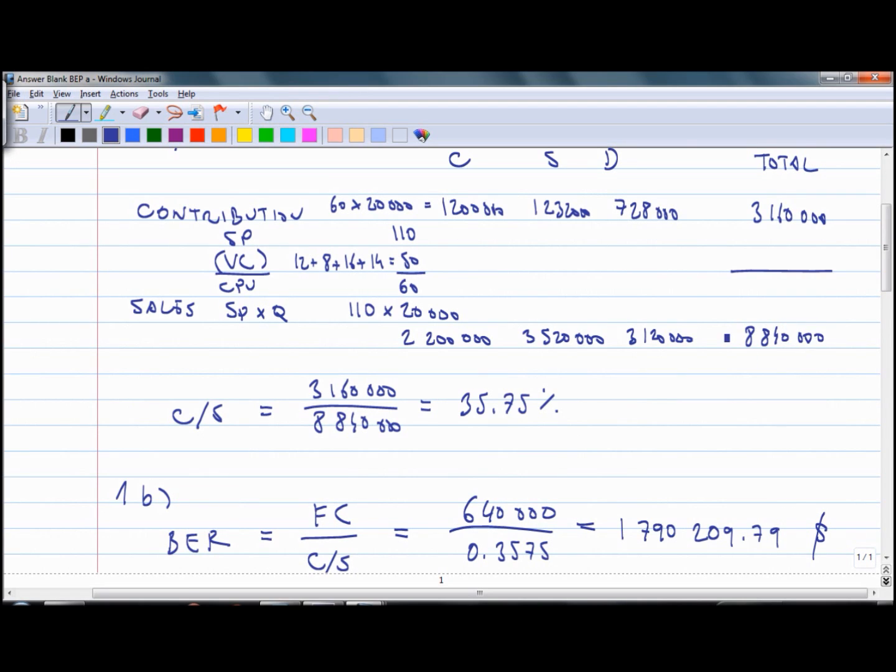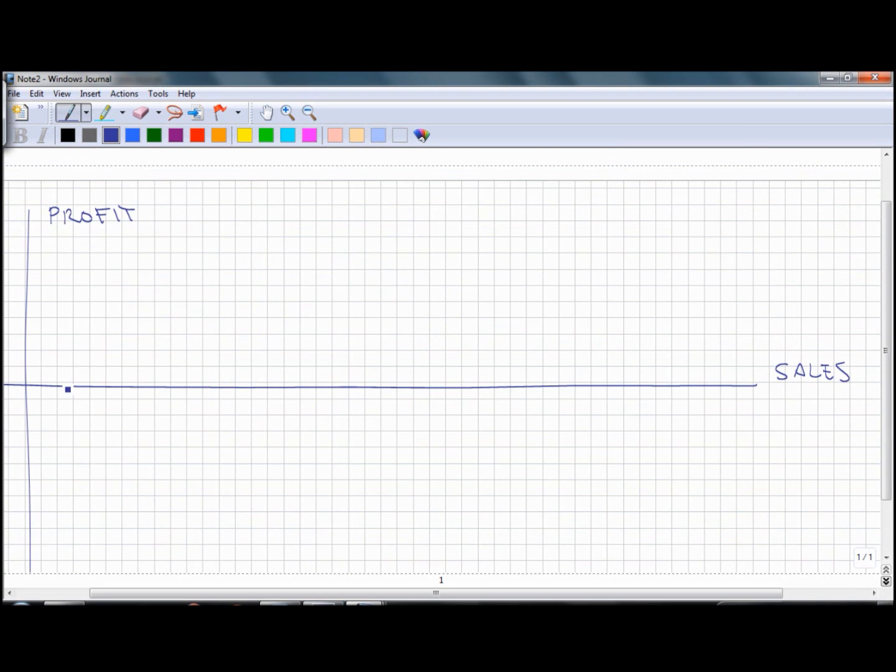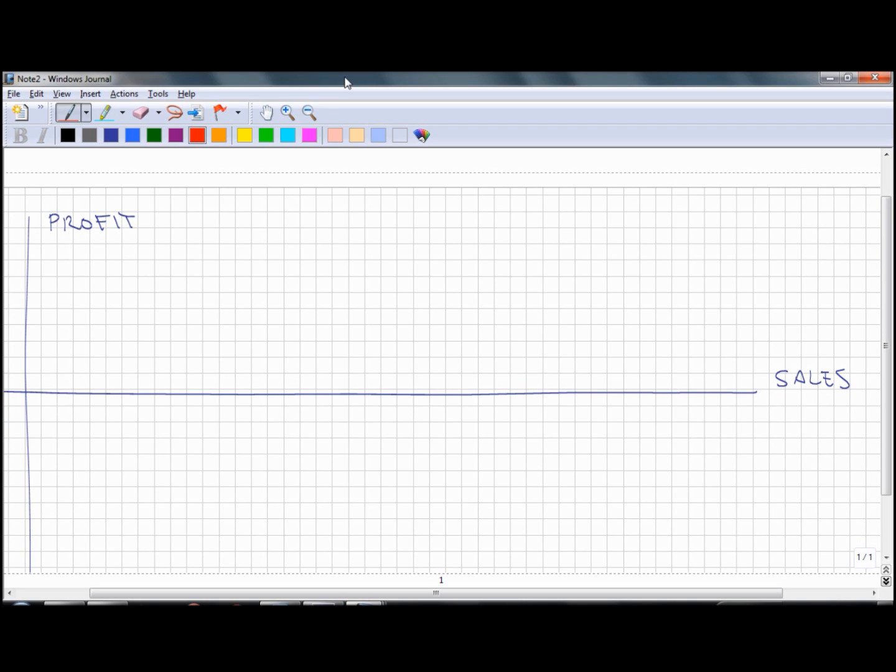Next we need to put appropriate measure on our graph. In part A we calculated that our total sales will be 8.8 million and break even sales will be 1.8 million approximately. Regarding the profit axis, we see that the profit will go from minus 640,000 up to about 2.5 million. I suggest that one square will represent 200,000 dollars. Let's draw the first point of fixed costs first on profit axis, and then break even point for constant mix of 1,790,000 on sales axis. Now we can connect the two points and we have that line.